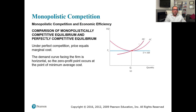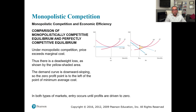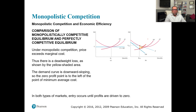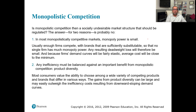Under perfect competition, price equals marginal cost. The demand curve facing the firm is horizontal, and the zero-profit point occurs at the point of minimum average cost. Under monopolistic competition, price exceeds marginal cost like a monopoly, so there is a dead weight loss shown by the yellow shaded area. The demand curve is downward sloping and the zero-profit point is to the left of minimum average cost. In both types of markets, entry occurs until profits are driven to zero.